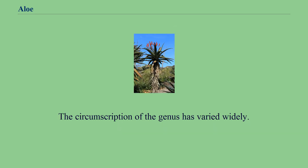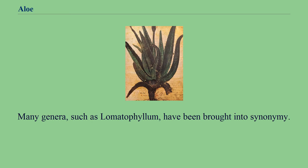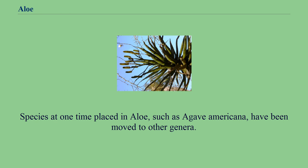The circumscription of the genus has varied widely. Many genera, such as Lomatophyllum, have been brought into synonymy. Species at one time placed in aloe, such as Agave americana, have been moved to other genera.